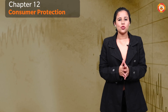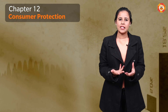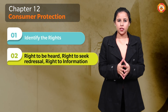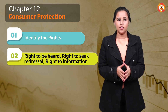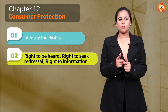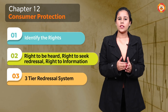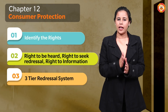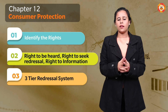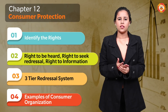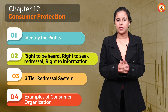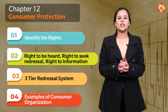The last chapter is Consumer Protection. Rights are very important — CBSE asks about them every time. Know the difference between right to be heard and right to seek redressal, and what right to information is — all rights should be clear. Last year CBSE asked about the three-tier redressal system: which case goes to the Supreme Court and which stops at the National Commission. That is the second important topic. Additionally, the role of consumer organizations is worth learning. To conclude, rights and the three-tier redressal system are the two most important topics.